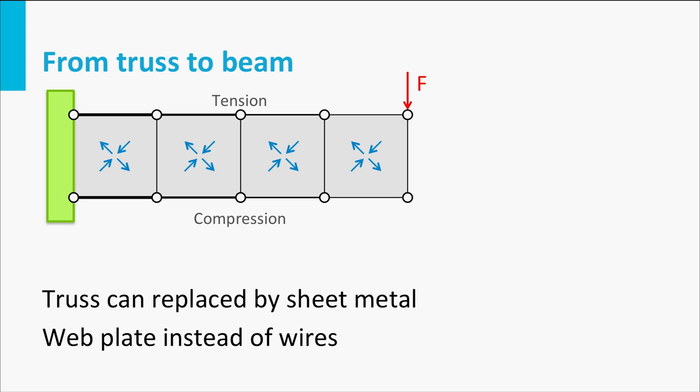If we now look at the overall picture we can state that the upper and lower bars can take the tension and compression forces resulting from the bending moment. The metal sheet takes care of the vertical or transverse loads. An I-beam will do the same. The flanges will take the horizontal loads induced by the bending moment and the web plates will carry the vertical load. A truss structure with metal sheet acts just like a beam-like element.